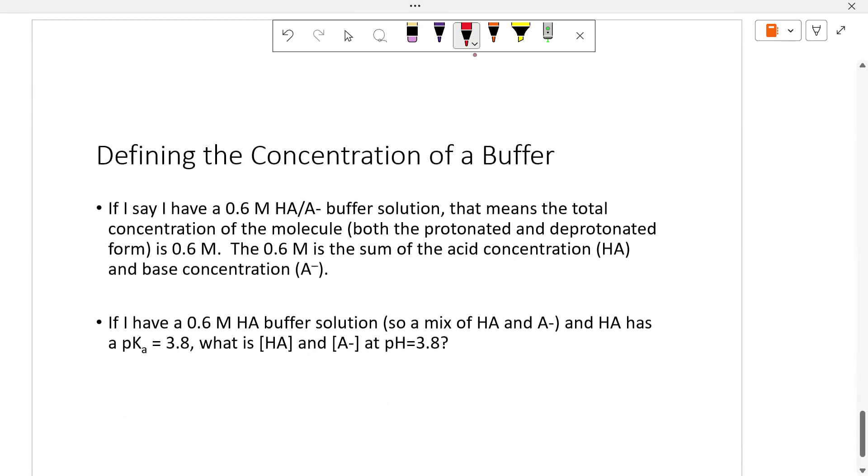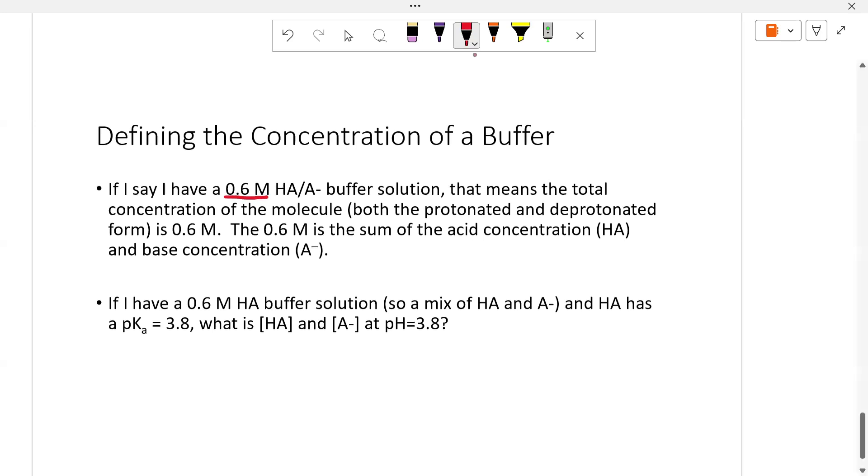So then the last thing we really want to talk about here is defining the concentration of a buffer because every buffer has two different molecules, right? The conjugate acid and the conjugate base, but really they're two forms of the same molecule. So when we define this concentration of a buffer, if I just say I have 0.6 molar of an HA buffer solution, I don't mean I have 0.6 molars of the acid. I mean, I have 0.6 molar total of both the protonated and deprotonated version. So I could have 0.5 and 0.1. I could have 0.3 and 0.3. I could have 0.4 and 0.2, but somehow they tally up to be 0.6 molar.